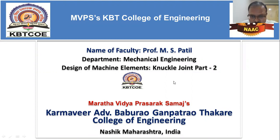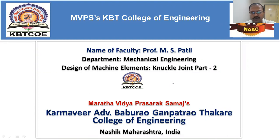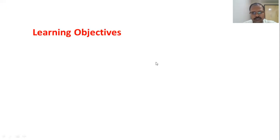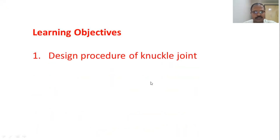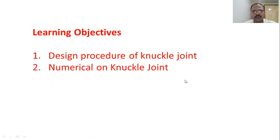Today we are going to study about the design procedure of knuckle joint and we will solve a numerical on it. In the previous video we have seen what is a knuckle joint and what are the different modes of failures of knuckle joint. The learning objectives of today's session are: first, we will revise the generalized design procedure of knuckle joint, and then we are going to solve a numerical on knuckle joint.